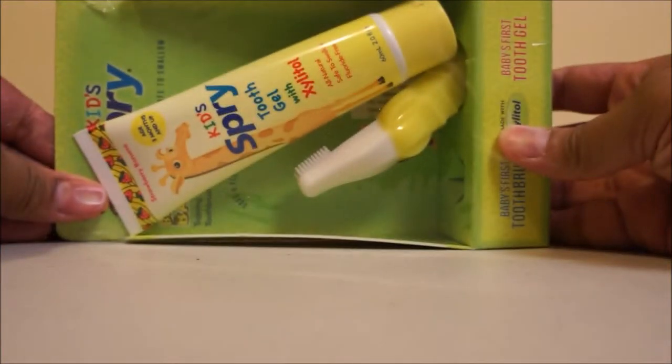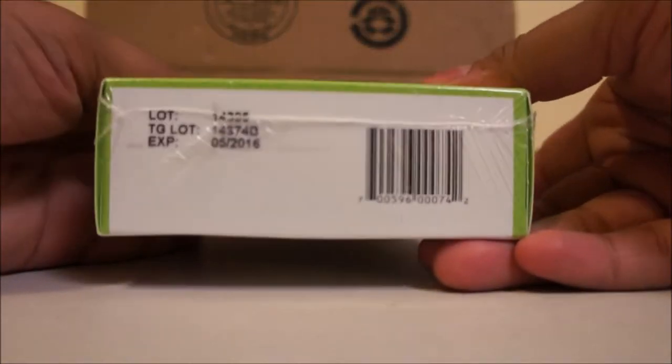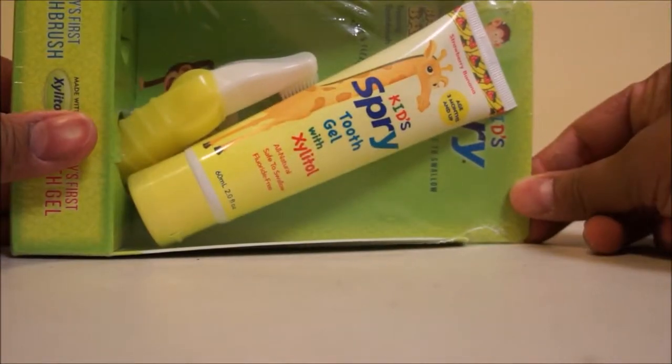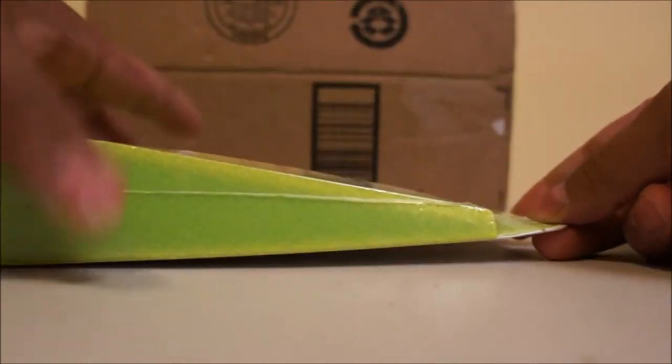This is the baby banana brush and tooth gel combo pack. I will fast forward through unpacking this.